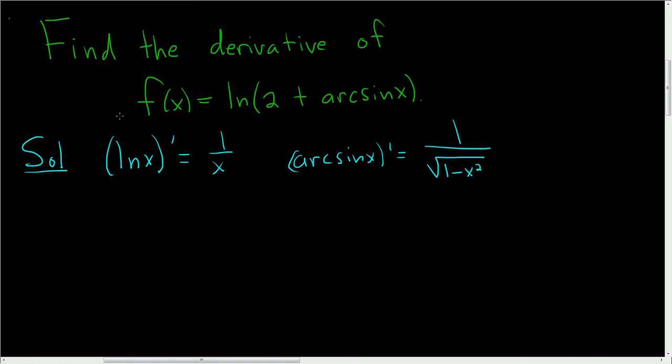Okay, so let's take our derivative. So f prime of x. Well, here we have to use the chain rule. So it's going to be 1 over this stuff. So 1 over 2 plus arc sine x times the derivative of the inside.